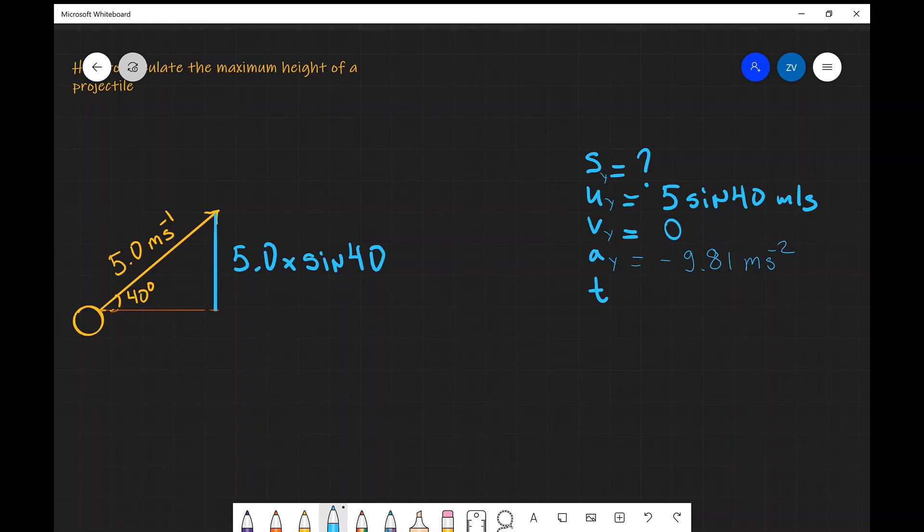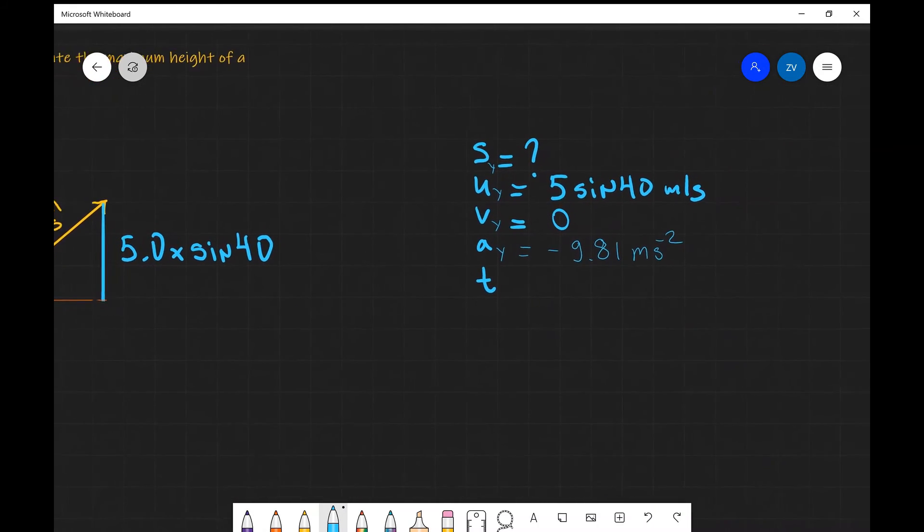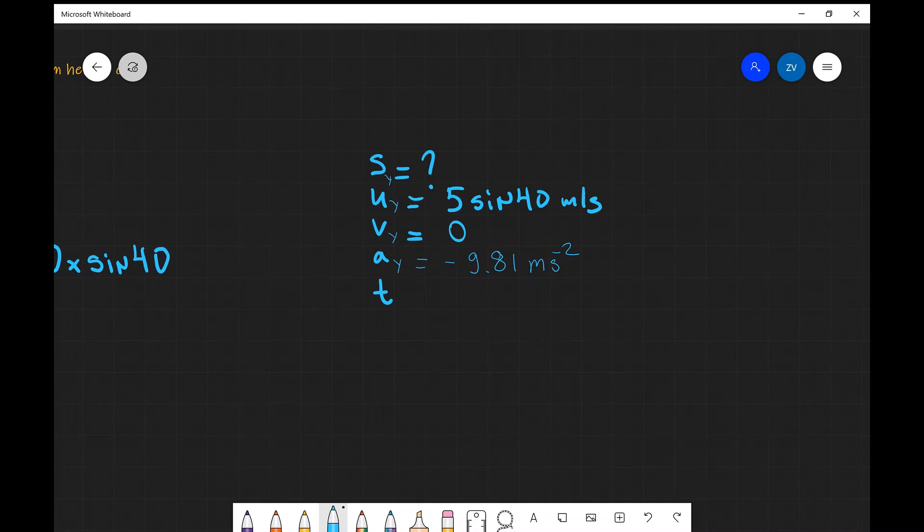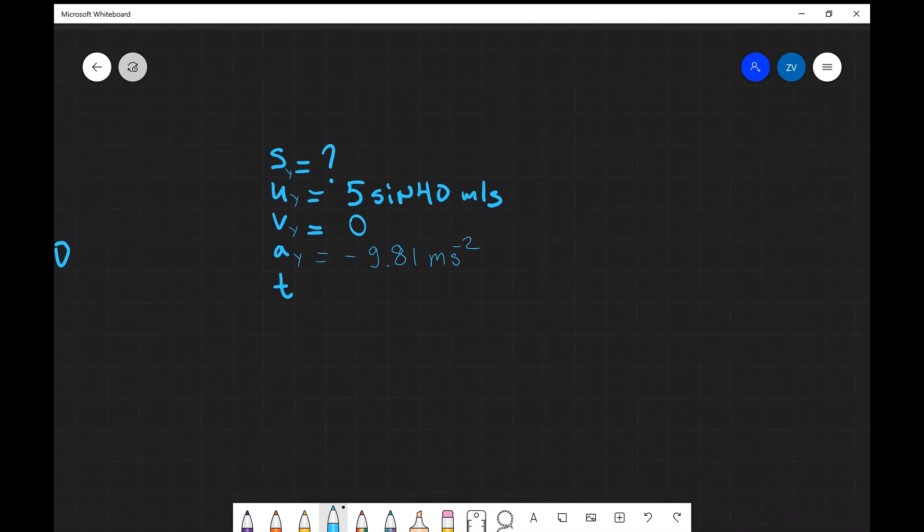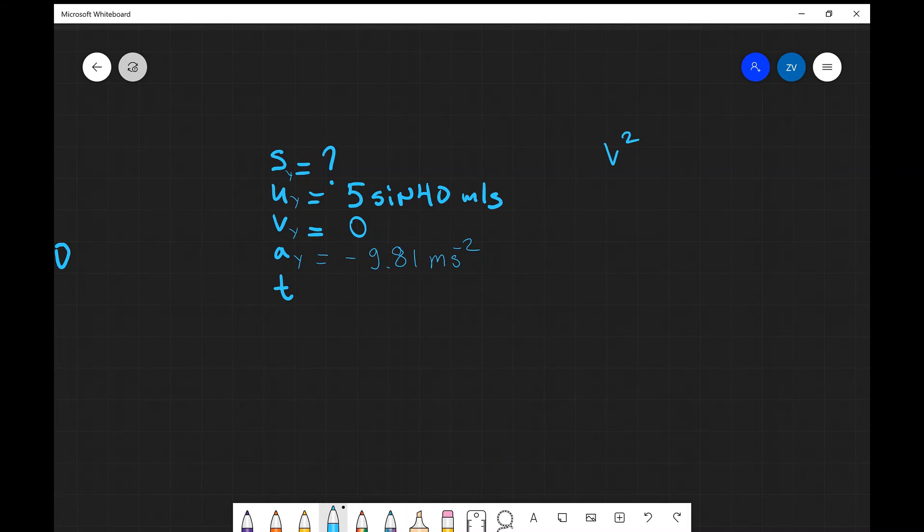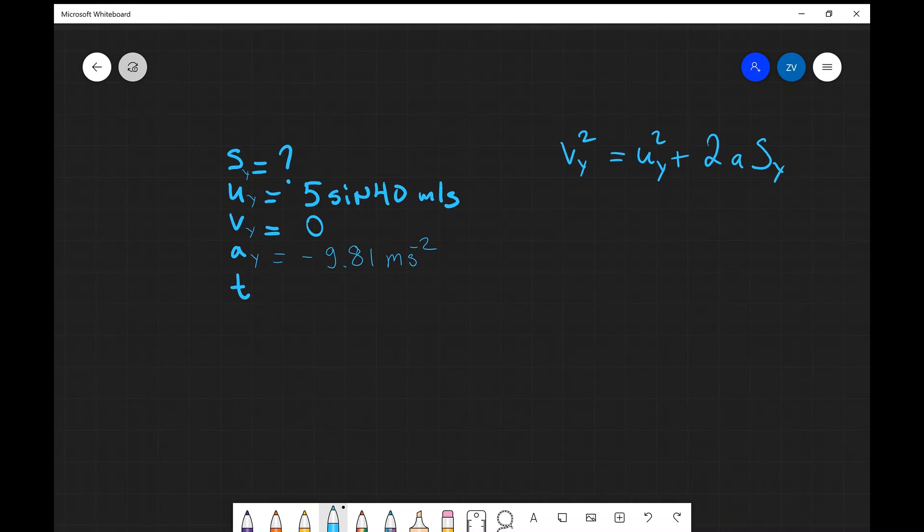Okay, now we have those four quantities and we're looking for one of them, so we can once again just apply this SUVAT equation. So V² is equal to U² plus 2aS. This is applied into the y direction, so I'm just going to leave this subscript for the velocities and for the distance traveled as well.